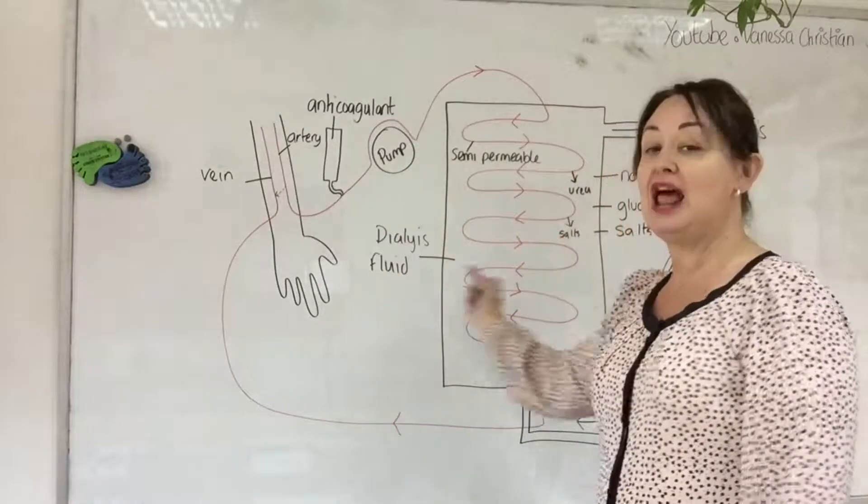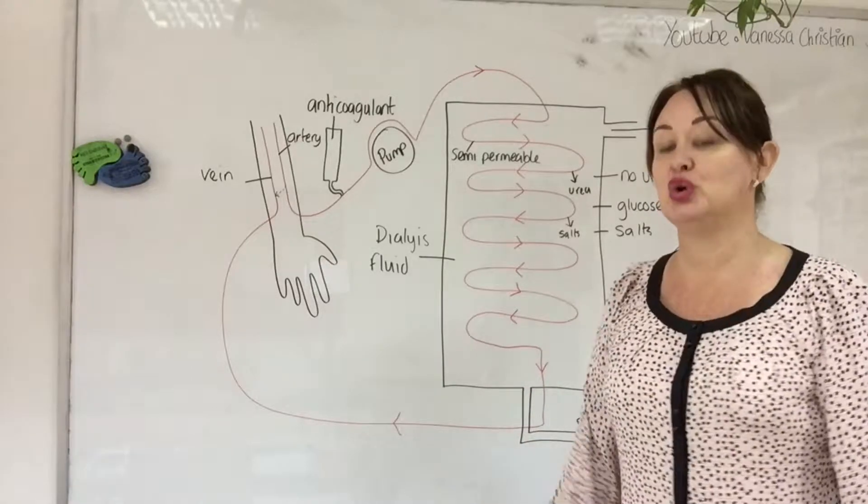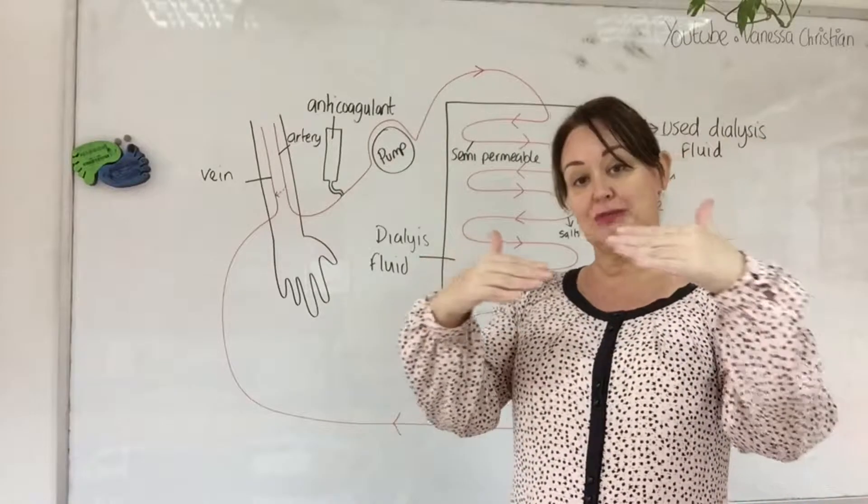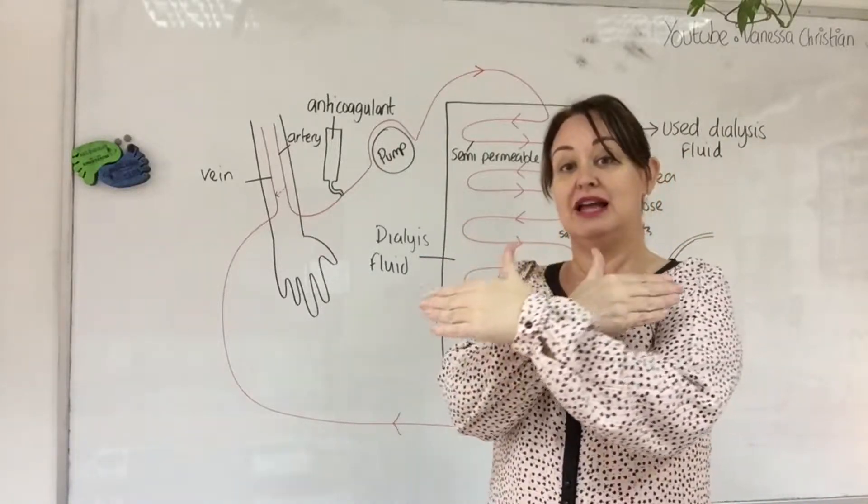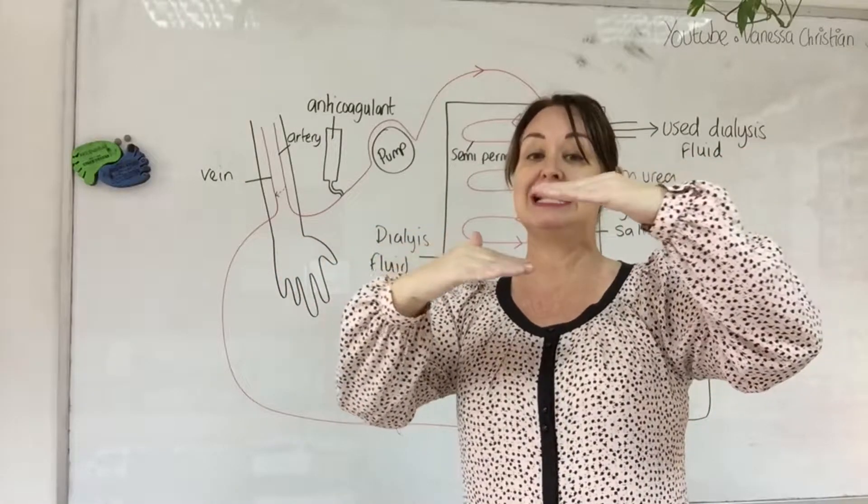Because it's running opposite, we're going to make for a more efficient diffusion surface. It maintains the concentration gradient along the whole length. That's actually really important. If you're looking for a high grade, you need to be able to explain the counter current mechanism whereby it's more efficient because the diffusion gradient is maintained over the whole length of tubing.